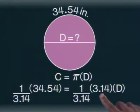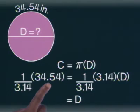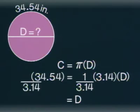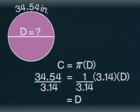On this side, you have just D. On this side, you have 34.54 divided by 3.14. The answer is 11. That's the diameter, 11 inches.